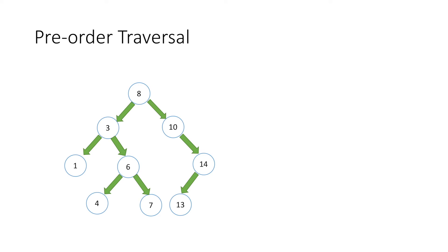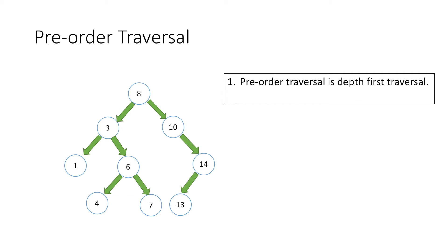Now let's look at preorder traversal using the same example. Preorder traversal is a depth first traversal, meaning we start at the root node and move down until we reach a leaf node. In this method we follow the rule: node, left, right — where node specifies that if we are at a node we print its value and mark it as traversed, then move to its left child, and when there is no left child we move to its right child.